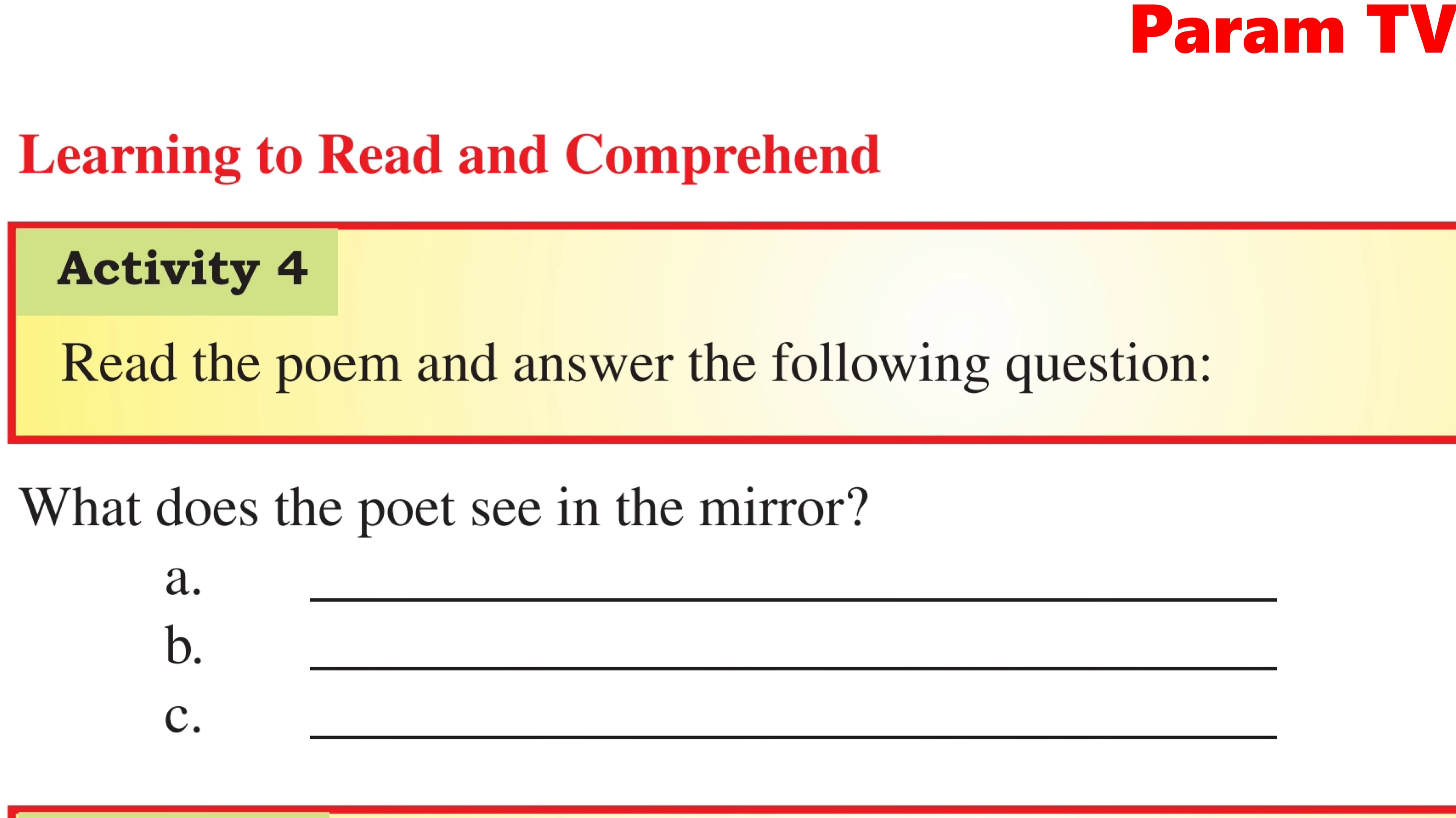Activity 4: Read the poem and answer the following questions. Now question answer. First, what does the poet see in the mirror? The poet sees self, meaning he sees himself.